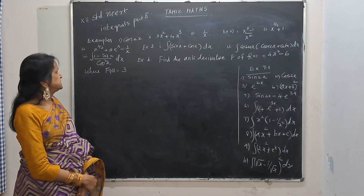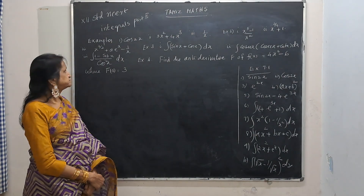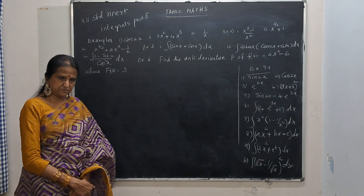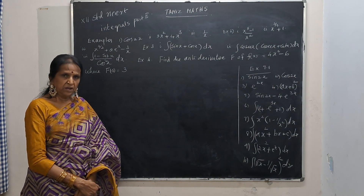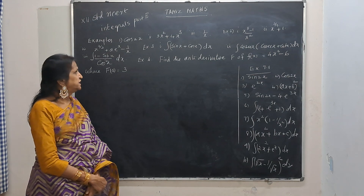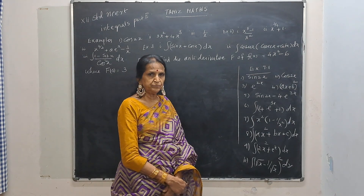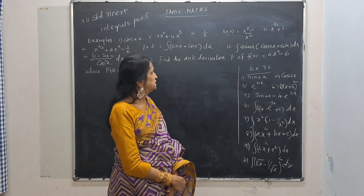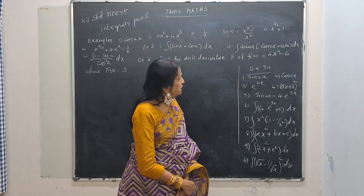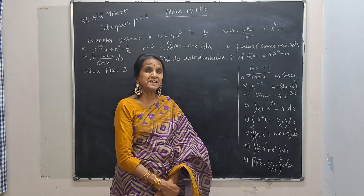These are examples from our book part 2. By inspection, we have to integrate: cos 2x, 3x squared plus 4x cubed, 1 by x, x cubed minus 1 by x squared, and x to the power of 2 by 3 plus 1, and so on — all this by inspection.